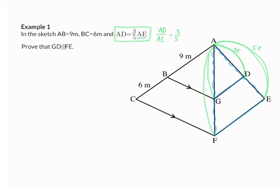To find the proportion for AG and AF, I'm going to work in triangle ACF, because they already have a line parallel to one of the sides of the triangle. If I compare AG and AF to something in this orange triangle, I'm going to have to work with AB and AC, so I need to know that AC is 15 meters.